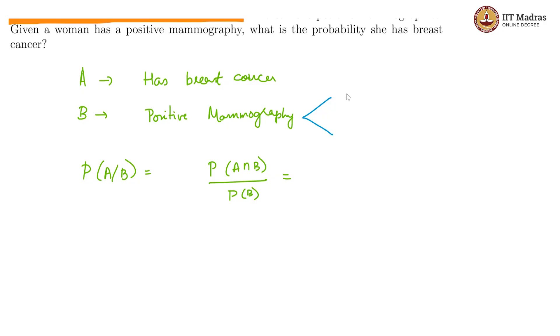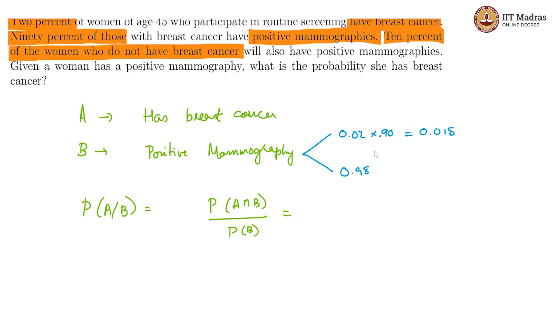People having breast cancer is 2%, so 0.02, and of them 90%, that is 0.9, show positive mammographies, giving us 0.018. In the remaining cases of the 98% who do not have breast cancer, 10% show positive mammographies, so 0.98 times 0.1 gives us 0.098.